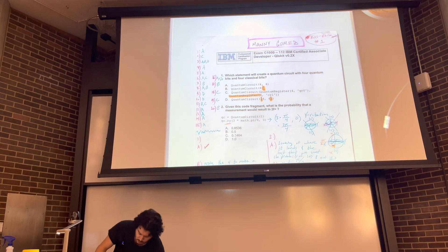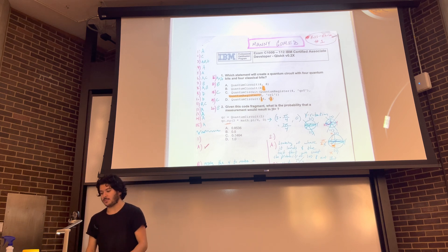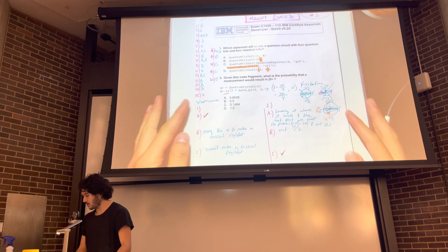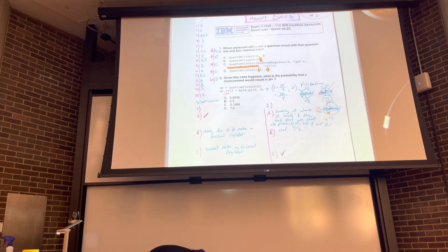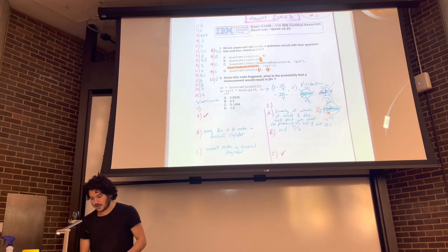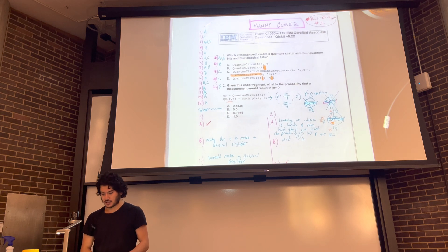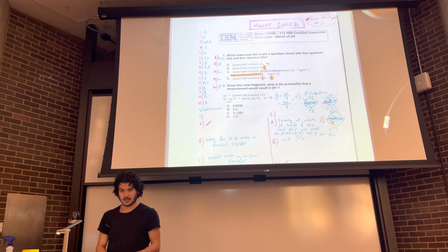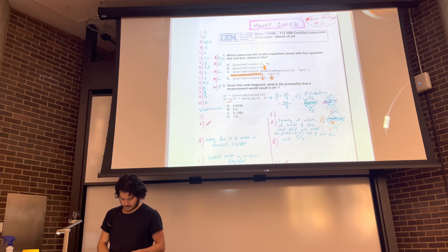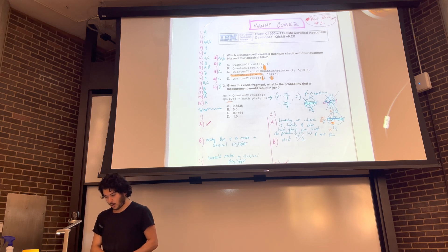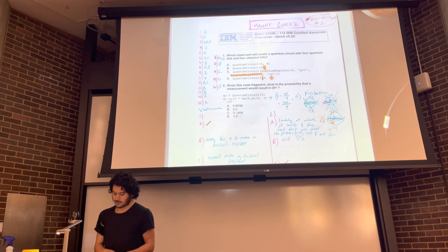So this first question, this is a 20-question sample exam from IBM, and we're going through the rationale and all those things. So let me get a pointer so we're able to see. Okay, first question. Which statement will create a quantum circuit with four quantum bits and four classical bits? So we look at our answer options. We see they're all fairly similar. They all use a function called quantum circuit.